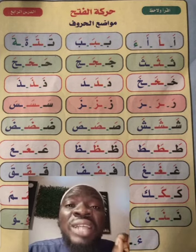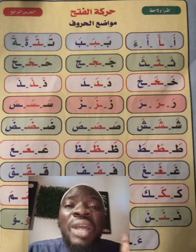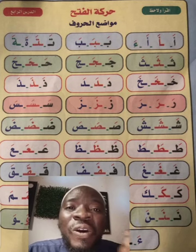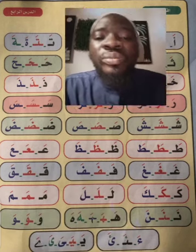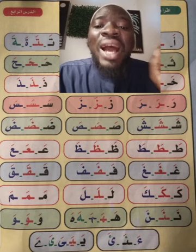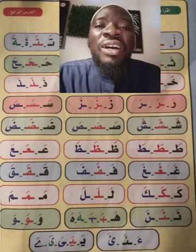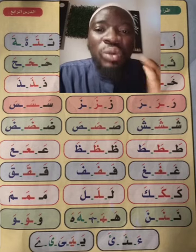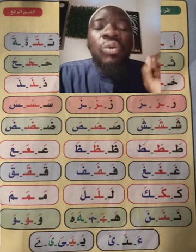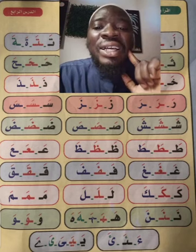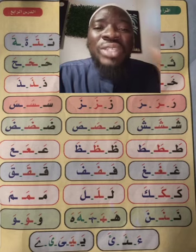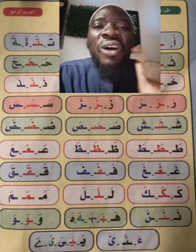Then the next letter is Ayn. Ayn and Ghayn look alike, but for Ayn it has no dot, while Ghayn has one dot above. Never mistake Ayn for Ha — they have differences, you can look at them very well. Ayn with Fathah, we sound A, A, A. Then Ghayn with Fathah, we sound GHA, GHA, GHA.